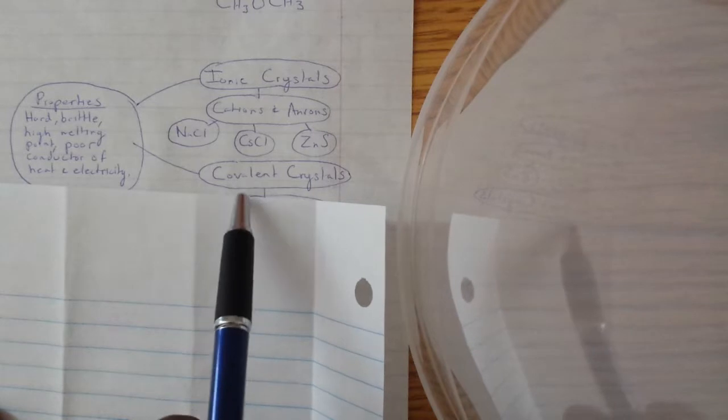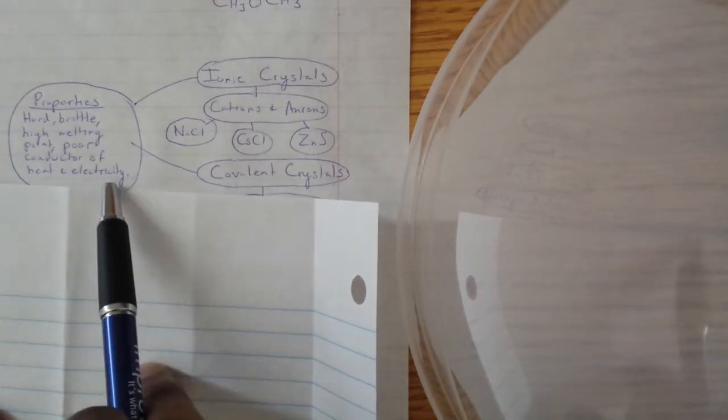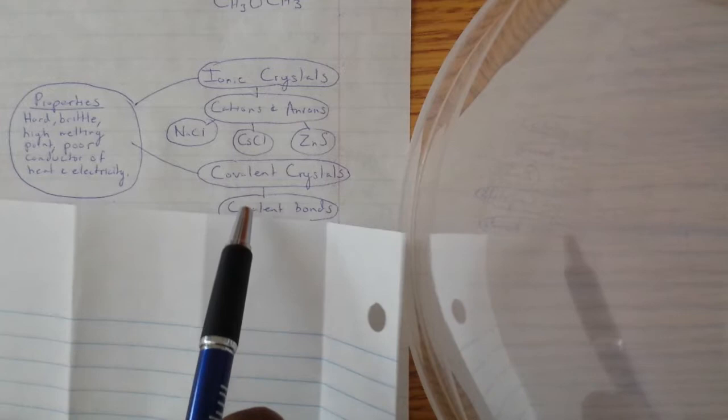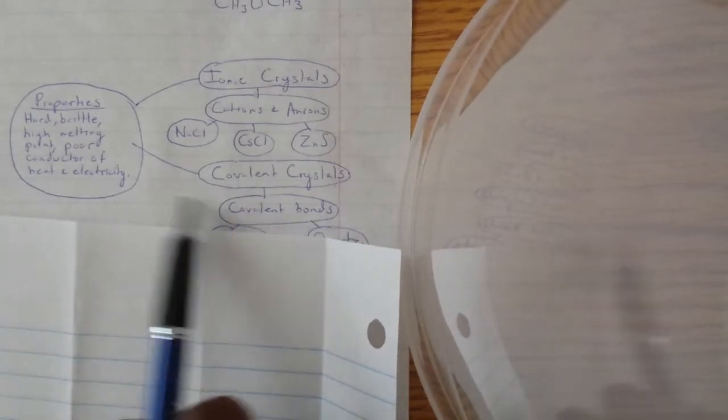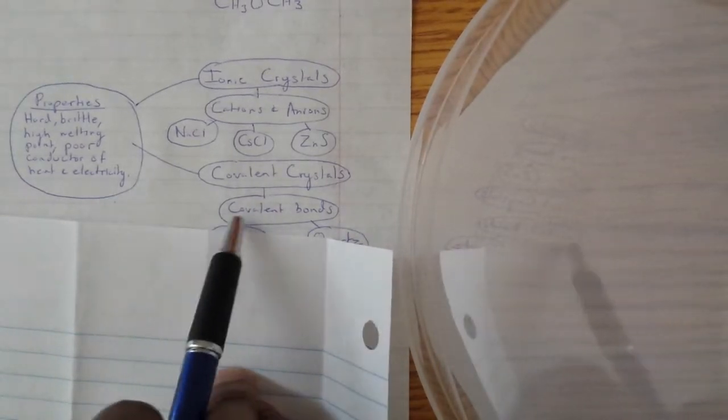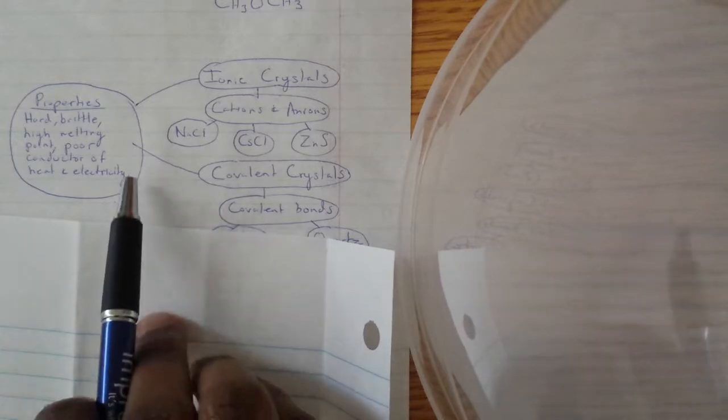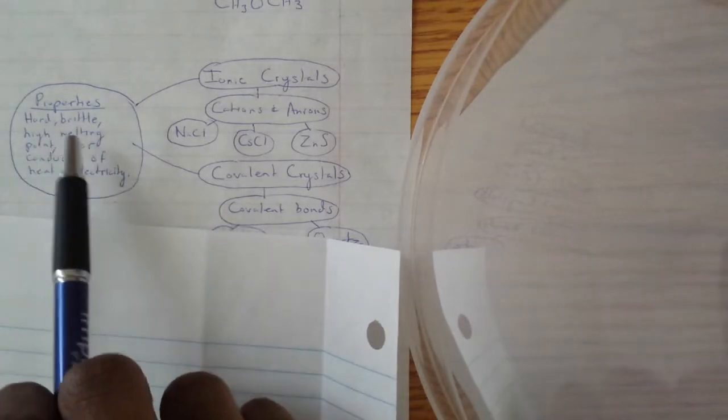Covalent crystals are pretty much the same except for the fact that they have covalent bonds. Once again, covalent bonds are pretty strong too, so they're going to maintain these characteristics.